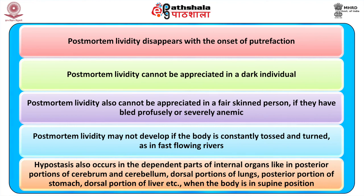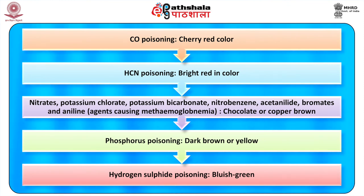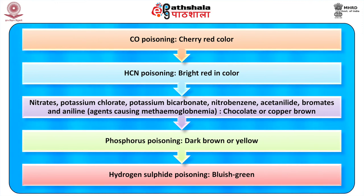Specific colour changes in post-mortem lividity indicate certain poisonings: carbon monoxide poisoning imparts a cherry-red colour instead of the normal reddish-blue. Hydrocyanic acid poisoning imparts bright red colour. Nitrates, potassium chlorate, potassium bicarbonate, nitrobenzene, acetanilide, bromides, and aniline — agents producing methaemoglobinaemia — give a chocolate or copper-brown colour. Phosphorus poisoning gives dark brown or yellow colour. Hydrogen sulphide (H₂S) poisoning imparts bluish-green discolouration.